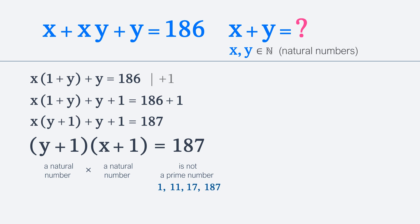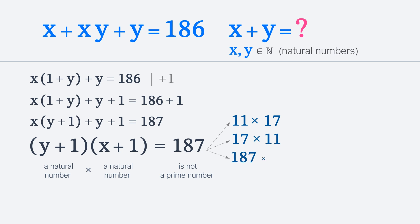So 187 can be expressed as a product of natural numbers as follows. The first option is 11 times 17. The second option is 17 times 11. The third option is 187 times 1. And the fourth, last option is 1 times 187. Note that 11 and 17 are prime numbers, so there are no more factorization options.